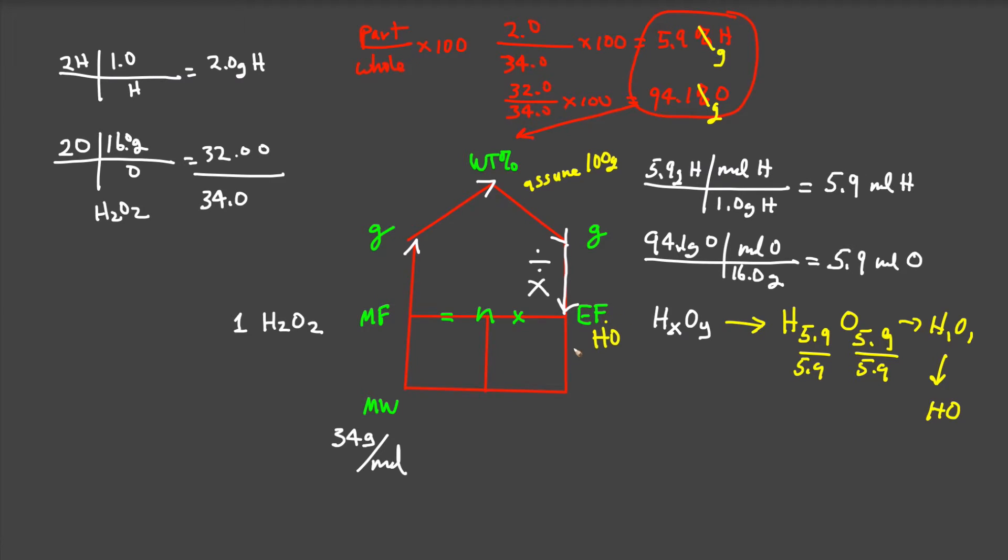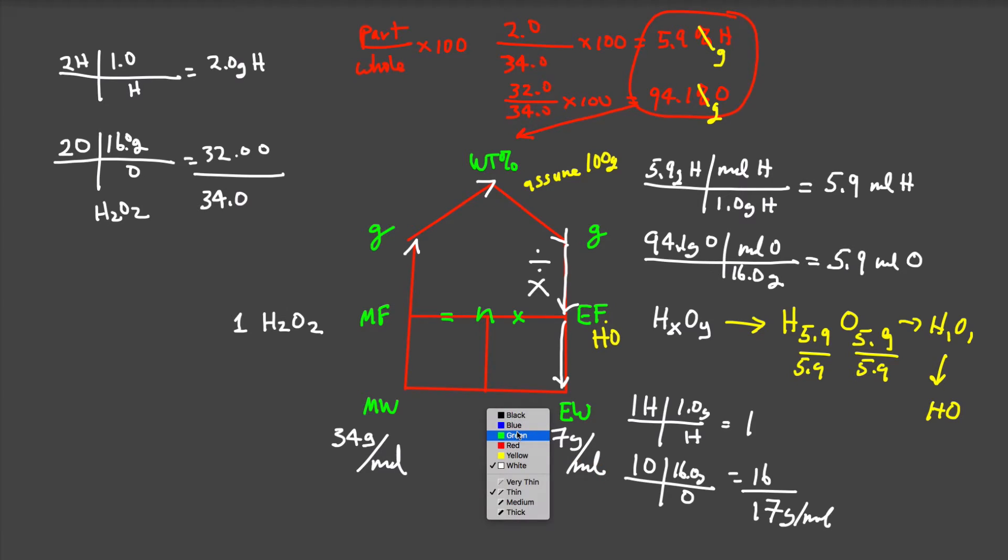If we have an empirical formula HO, it's fairly easy to determine the empirical weight. We have one hydrogen plus one oxygen (16 grams per mole), which gives us 17 grams per mole. Now this is very straightforward: 17 times what number equals 34? Very easy - N must equal 2.